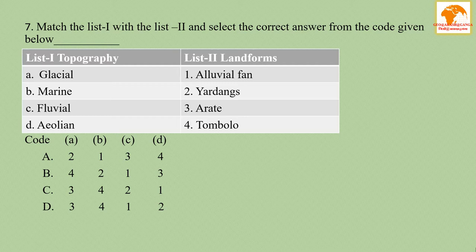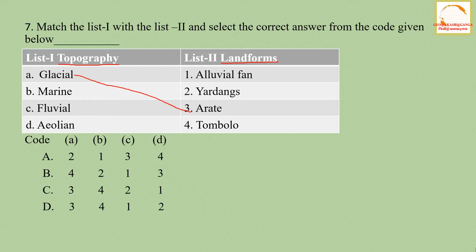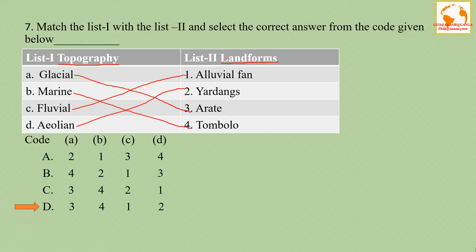Question number seven: match list one (topography) with list two (landforms). Esker is a glacial landform; tombolo is a marine landform; alluvial fan is a fluvial landform; and yardang is an aeolian landform. The correct answer is option D.